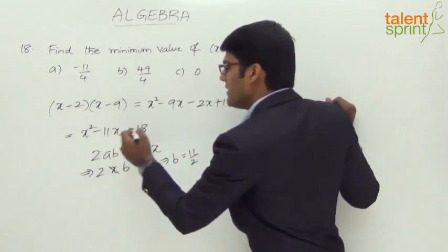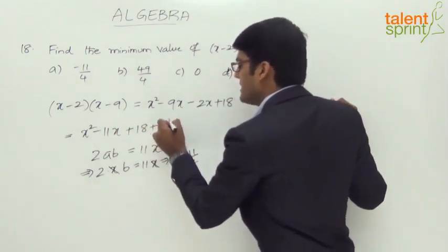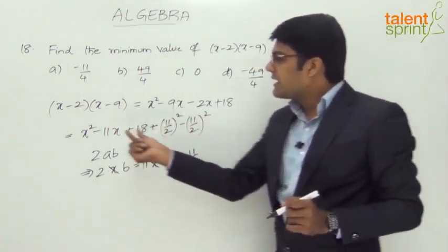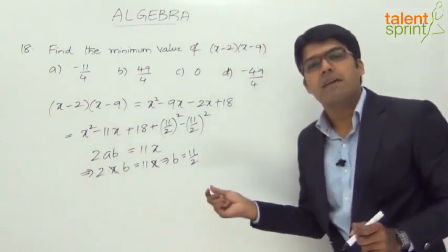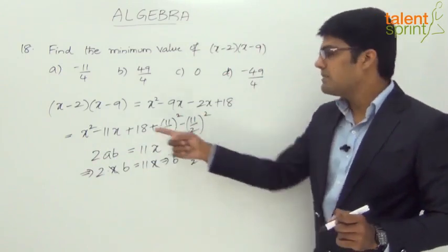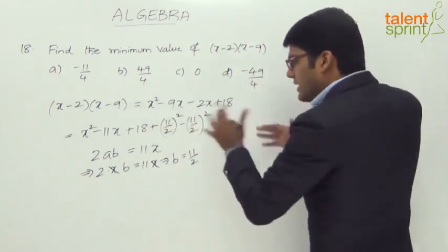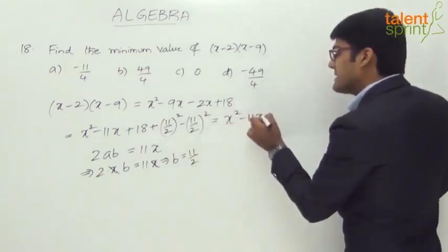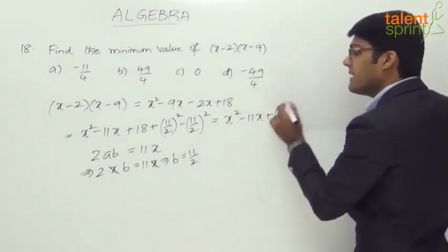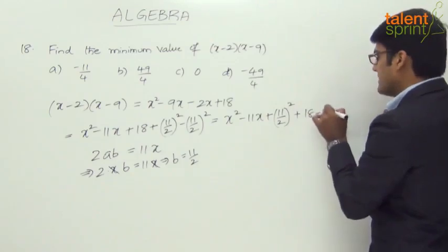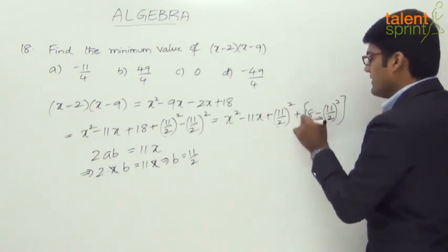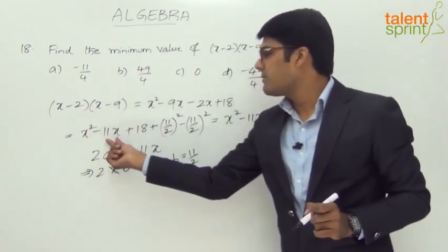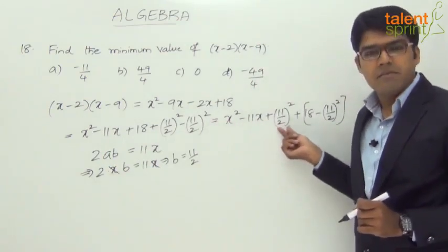What we will do now is, in this expression, add b squared and subtract b squared — that is, plus (11 by 2) squared minus (11 by 2) squared. We considered 11x as 2ab, calculated the value of b, and are now adding and subtracting b squared. Arranging the terms properly, we get: x squared minus 11x plus (11 by 2) whole square, plus 18 minus (11 by 2) whole square.